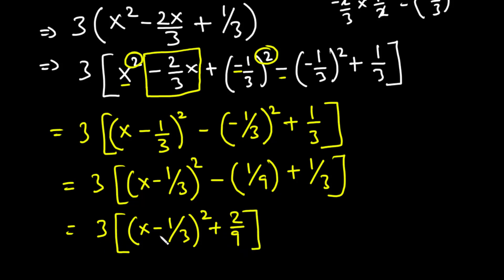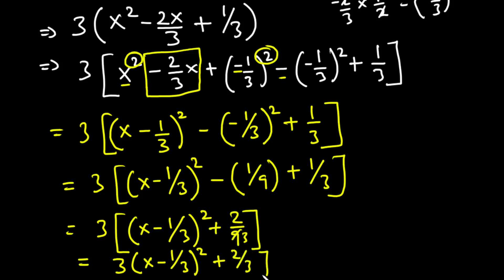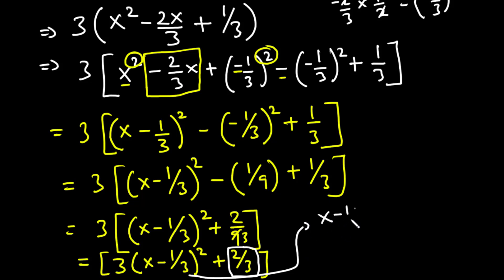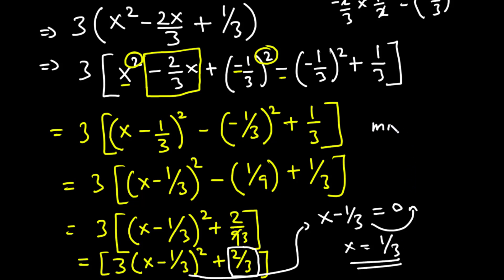Multiplying the 3 across: 3(x - 1/3)² + 2/3. The minimum value is 2/3. To find where it occurs, we set x - 1/3 = 0, giving x = 1/3. So the minimum value is 2/3 and it occurs at x = 1/3.